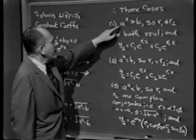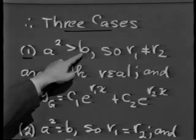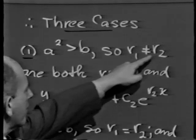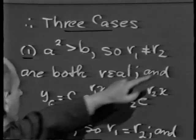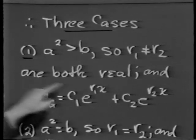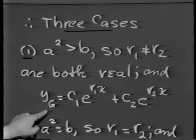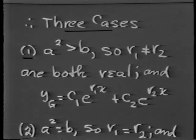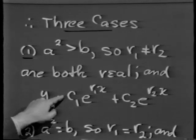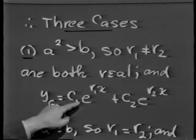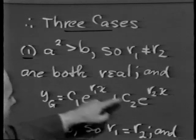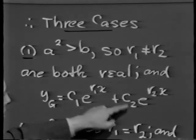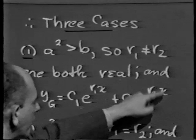The three cases are: Case 1 — a squared is greater than b, so r1 is not equal to r2 and they're both real. In this case, the general solution of y double prime plus 2ay prime plus by equals 0 is a linear combination of e to the r1x and e to the r2x, namely c1 e to the r1x plus c2 e to the r2x.